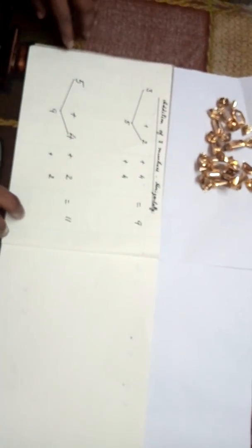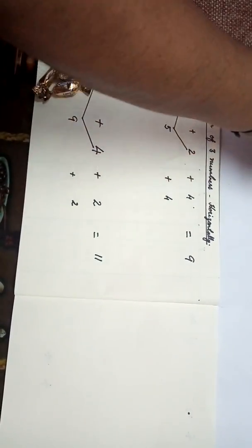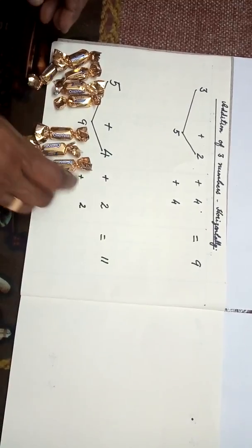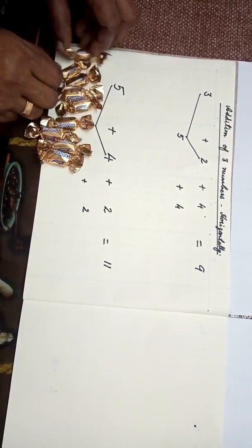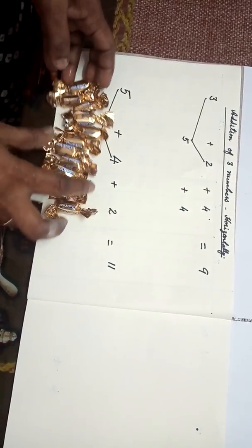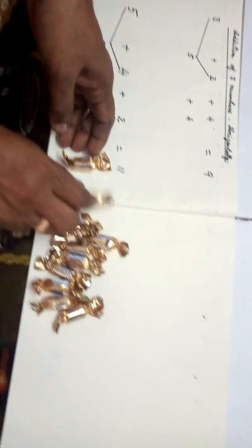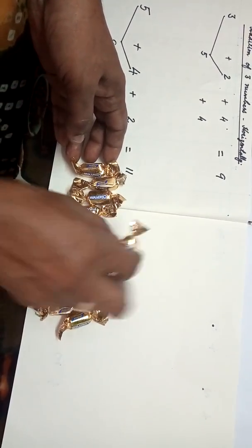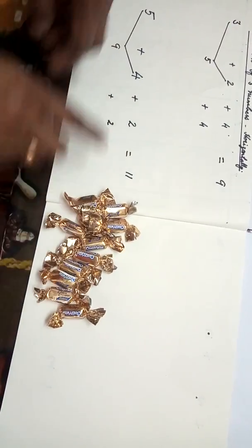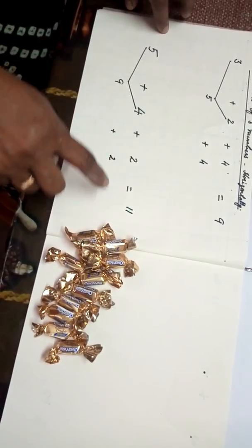One more example. First take 5 toffees, then second: 4 toffees. 5 plus 4 is equal to 9. Then 2 more we are taking. So, what will be the total number? 5 plus 4 plus 2 is equal to 11. 1, 2, 3, 4, 5, 6, 7, 8, 9 — then 11. So, what is the answer? 5 plus 4 plus 2 equals 11.